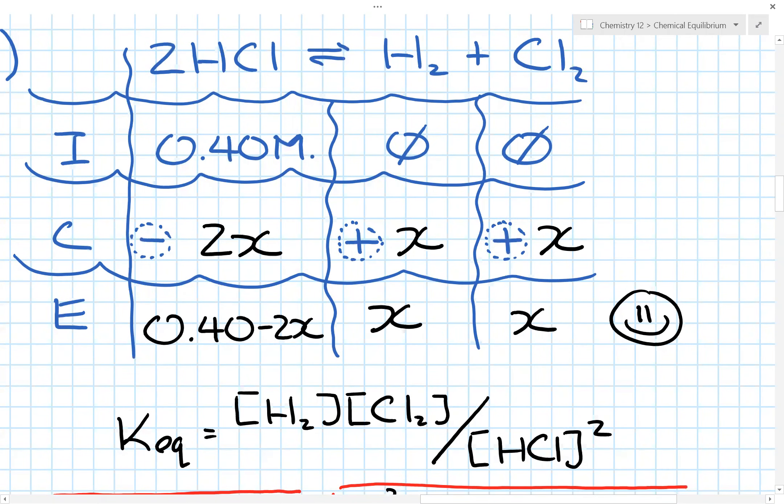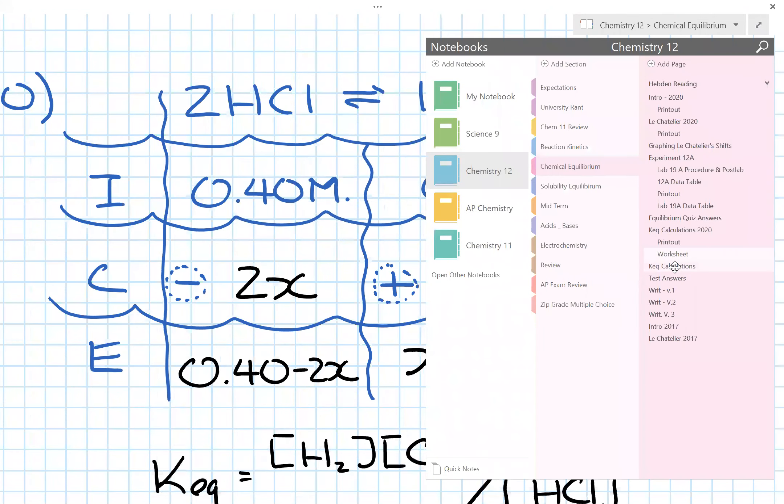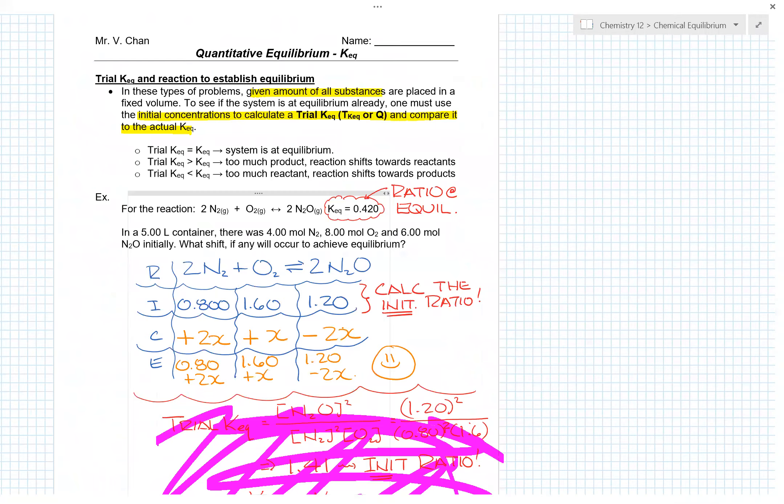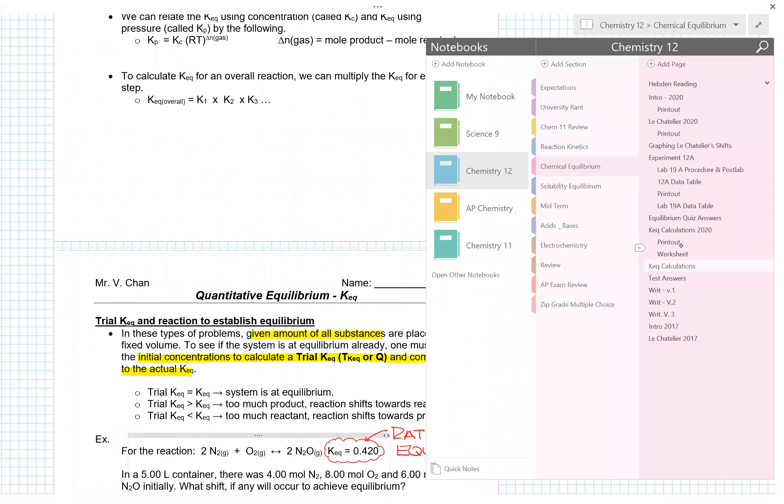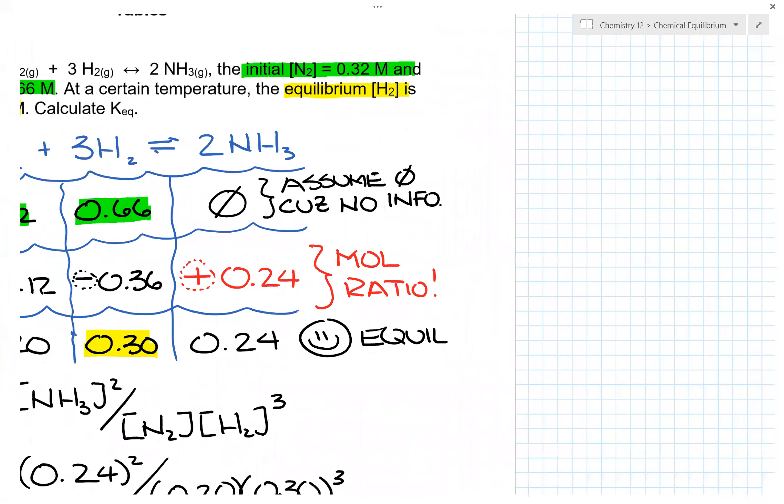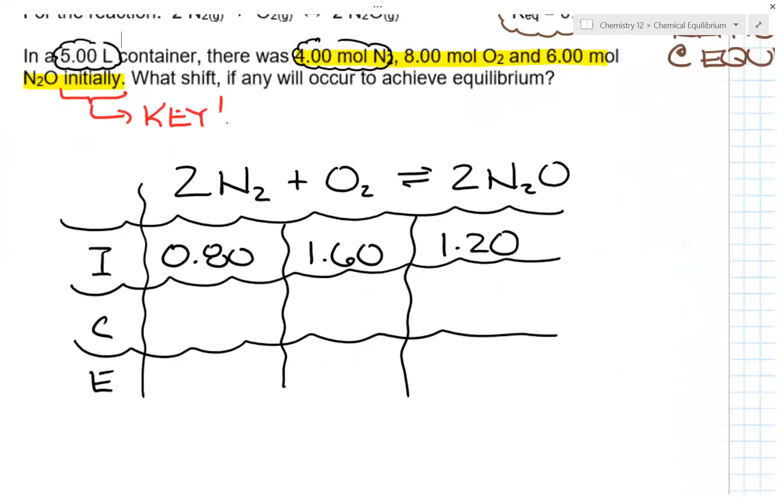If we look at the homework example we did last day, notice there was always a 0 somewhere. So what we could do was we could predict which side would go up, which side would go down, because there was a 0 somewhere in the initial concentrations. But in this case, we don't. Both the reactants and the products are filled.